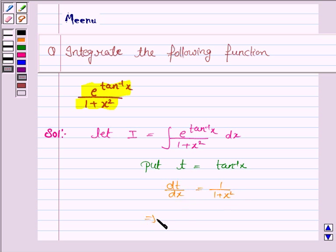And this implies dt is equal to 1 upon 1 plus x square dx.